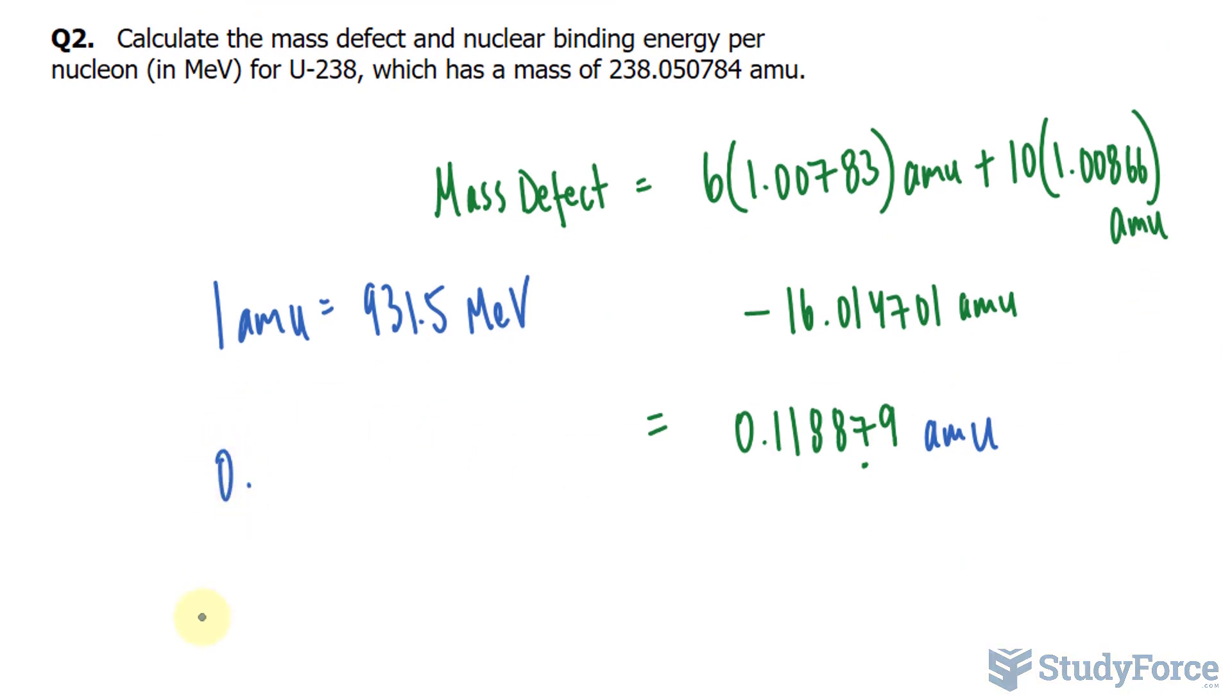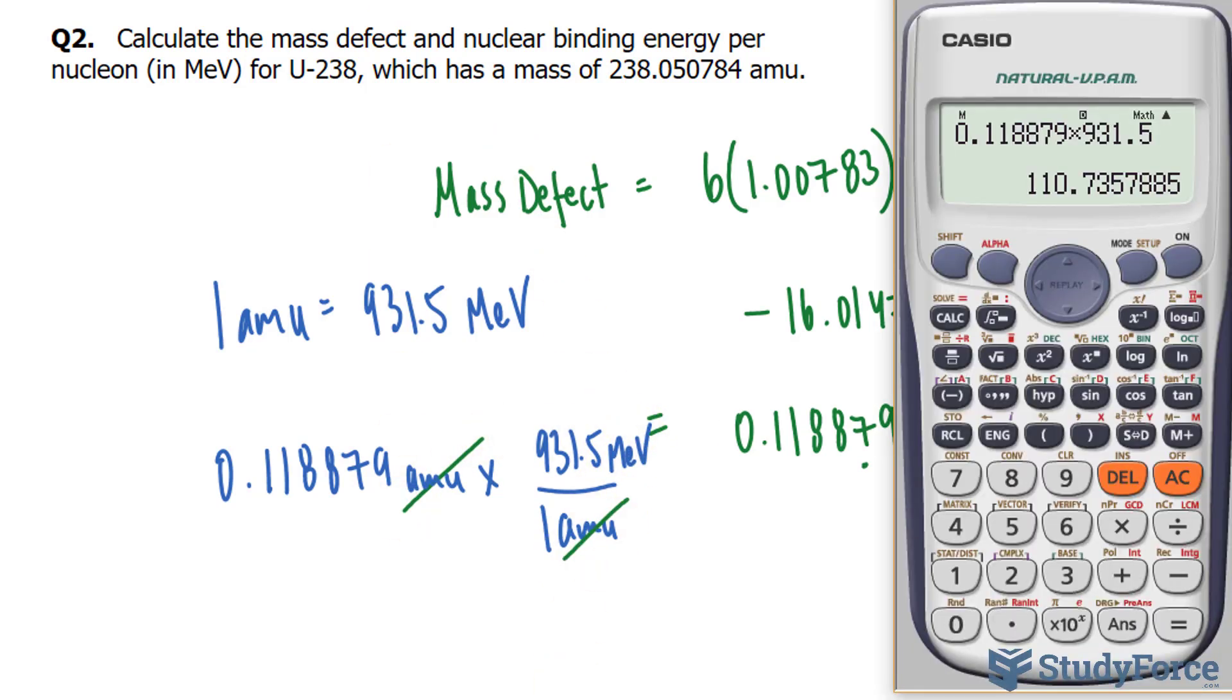Let's convert this: 0.118879 AMU. We'll multiply this by one AMU at the bottom, and at the top, 931.5 MeV. This will cancel out. Let's use our calculator. You should end up with the following number. Don't round it yet.